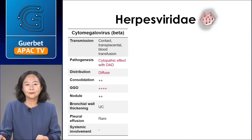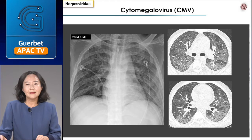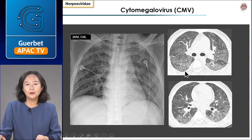Another important virus in immune-compromised hosts is cytomegalovirus. CMV shows diffuse ground-glass opacity with nodules on CT scan. The differential diagnosis includes Pneumocystis jirovecii pneumonia or pulmonary edema. This is a 28-year-old male with underlying CML presenting with shortness of breath and dyspnea. Diffuse ground-glass opacity is shown on CT scan. CMV pneumonia is a life-threatening pulmonary infection in immune-compromised hosts, especially AIDS patients, with cytopathic effects causing severe pneumonia with diffuse alveolar damage.